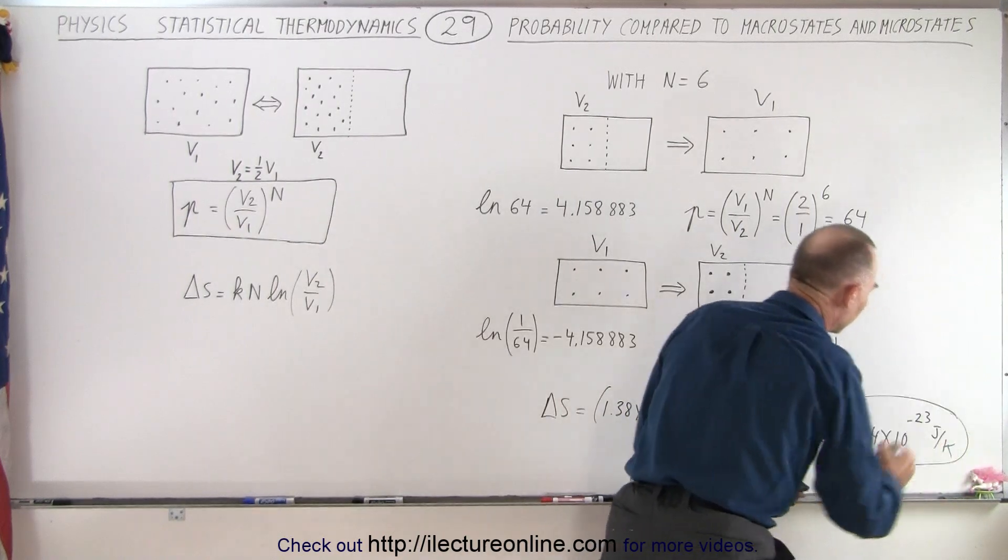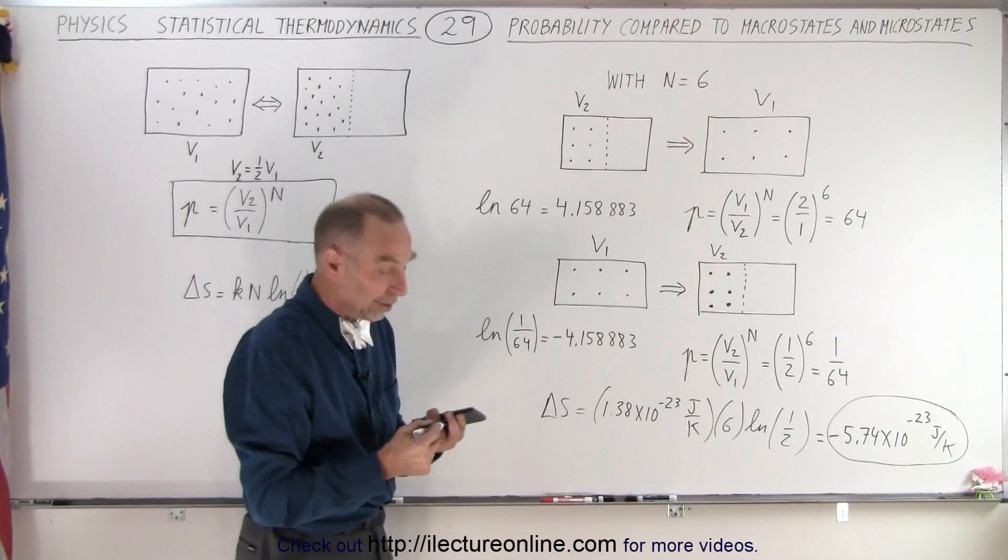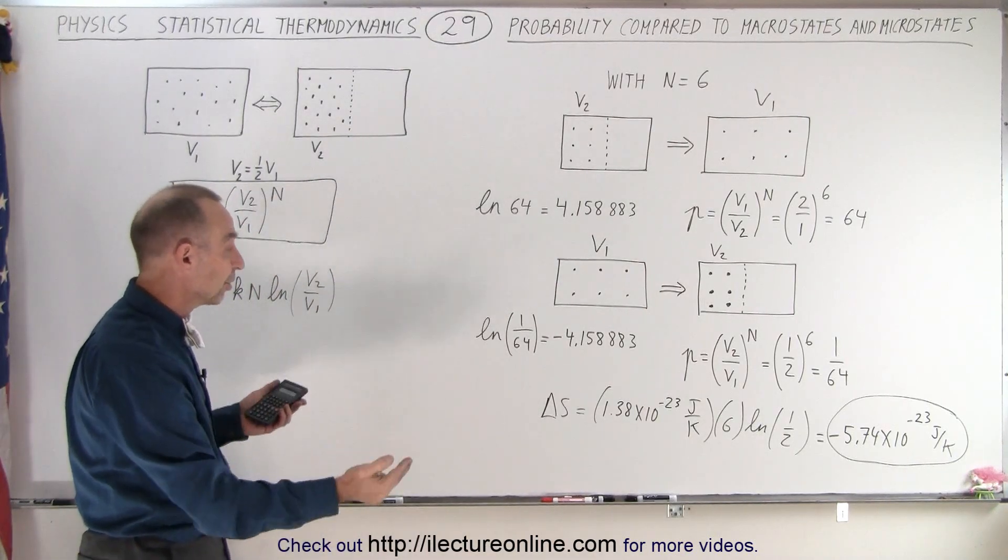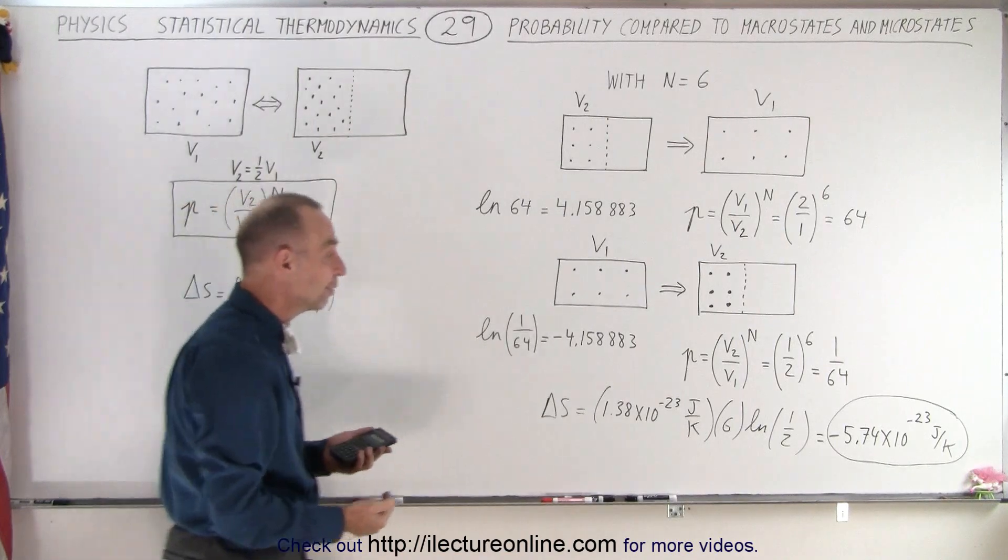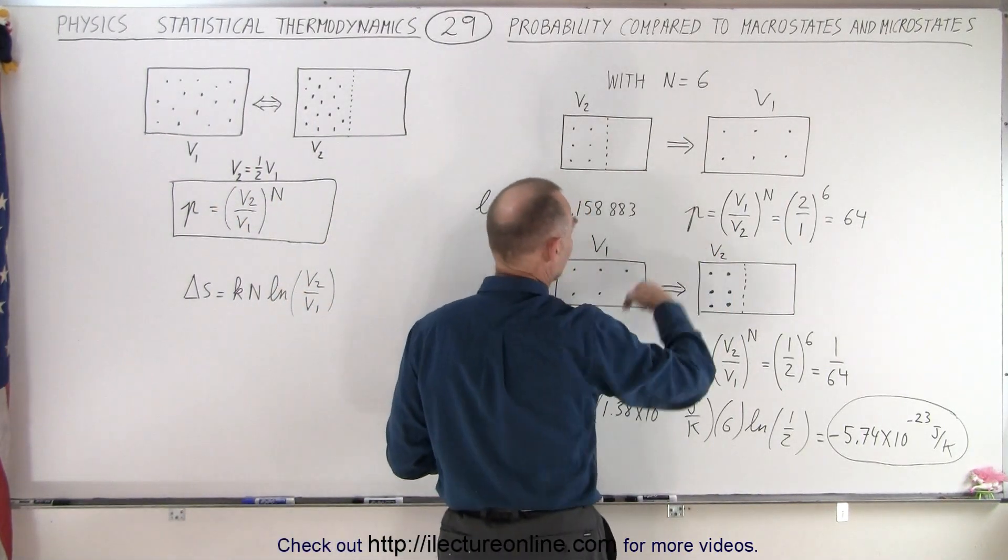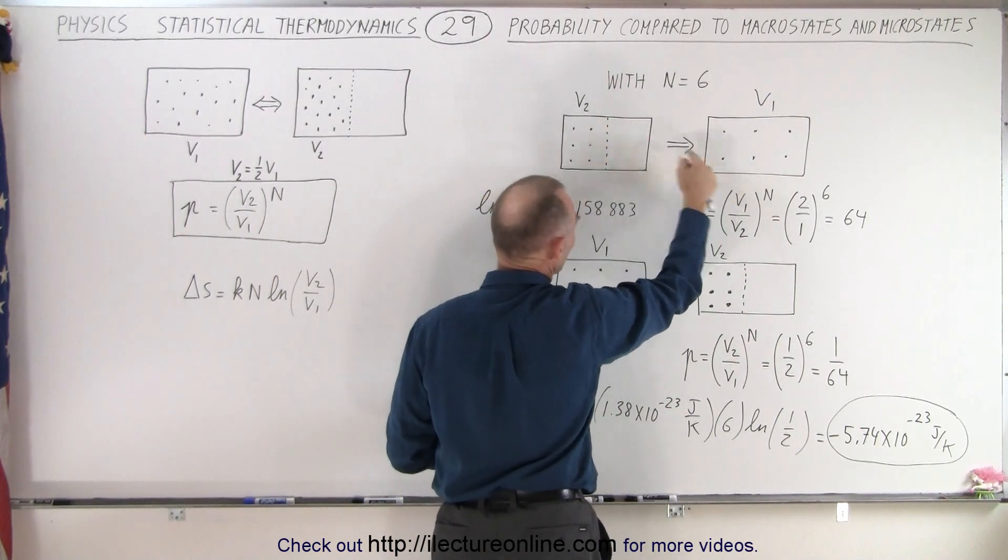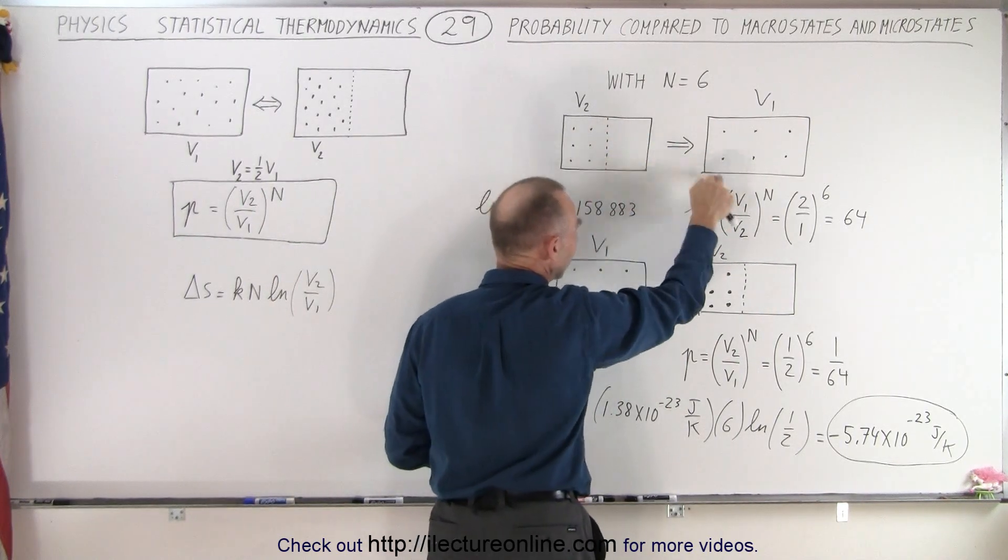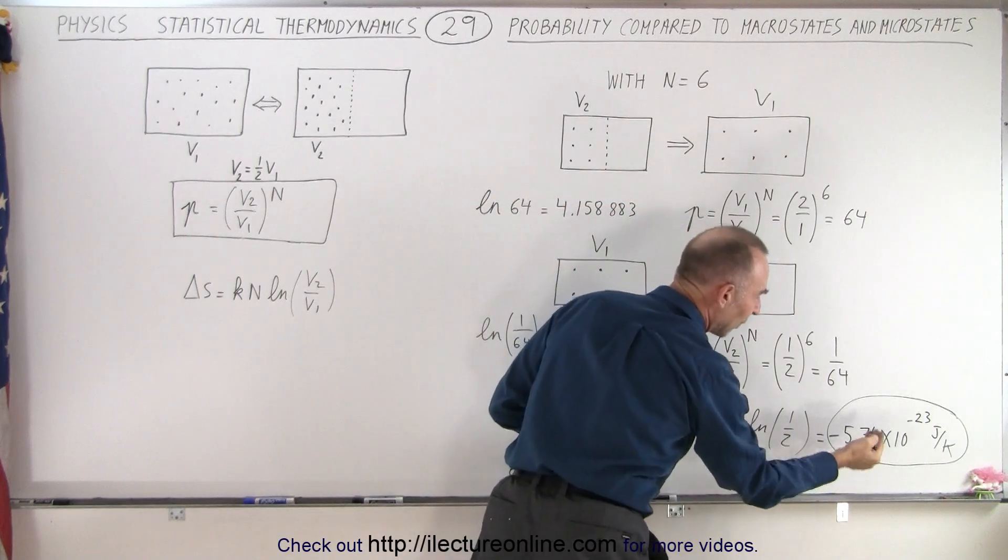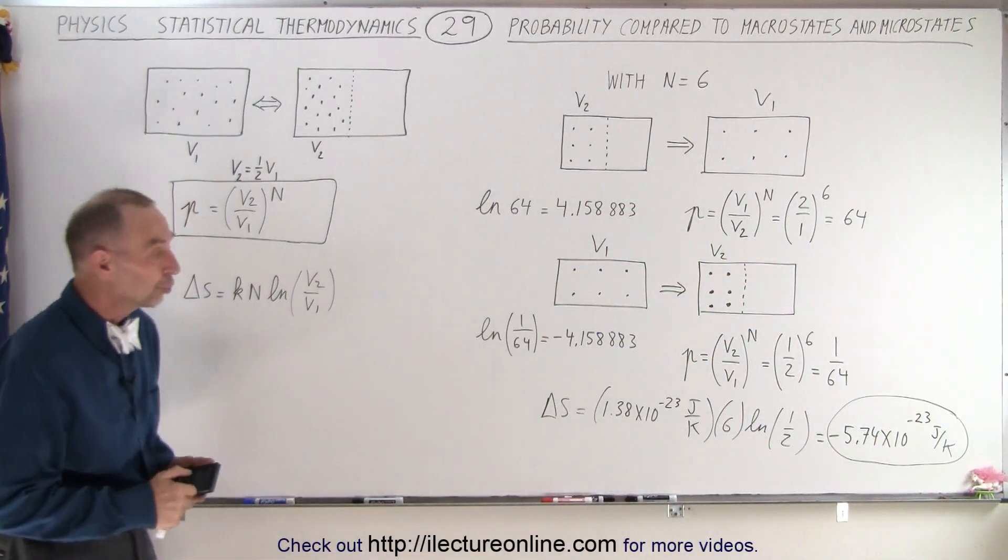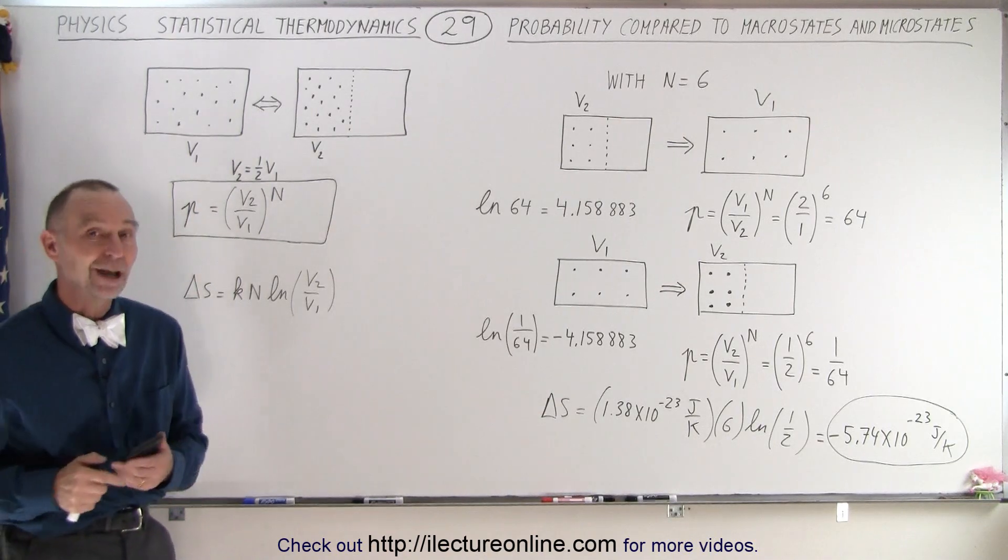So, let's remember that number when we go to the next video, because then we're going to compare that. But at least you can see that it works one way or the other. Now, if we, of course, go from this situation right here, no, from this situation to this situation, which is from a more ordered state to a less ordered state, we will then get a positive 5.74, times 10 to the minus 23 joules per Kelvin. And that is how it's done.